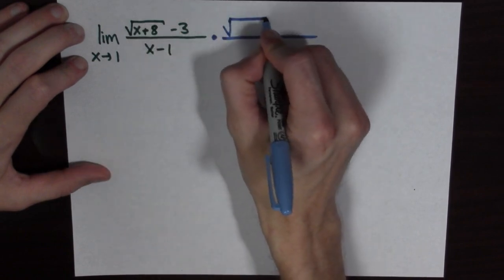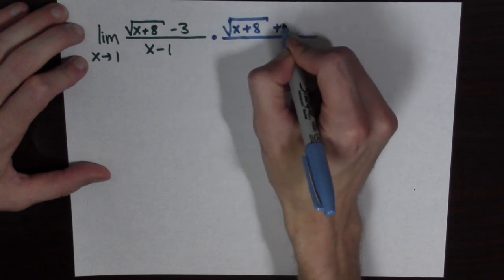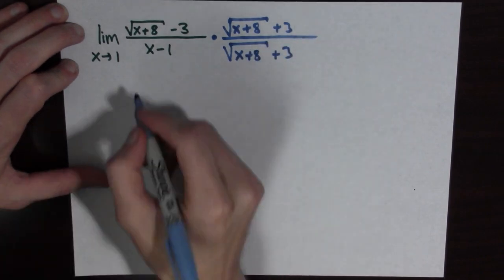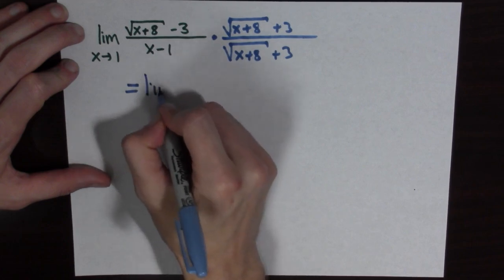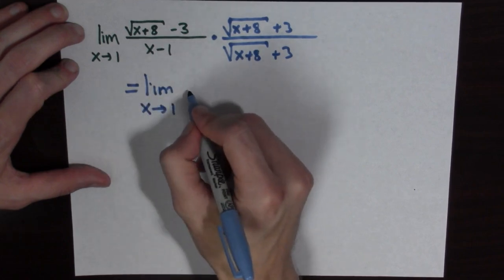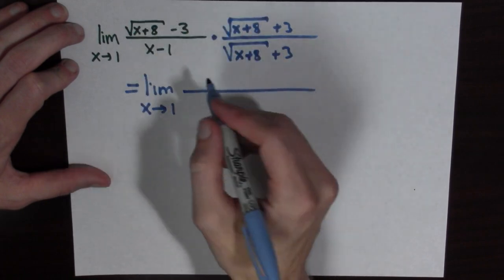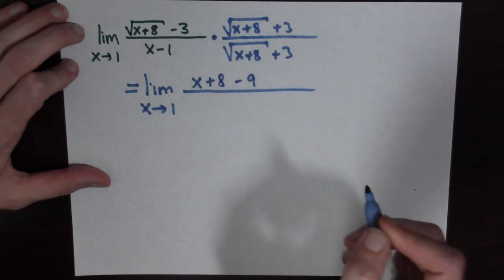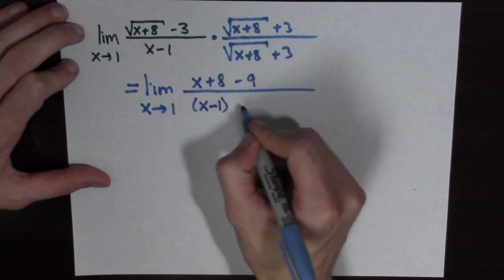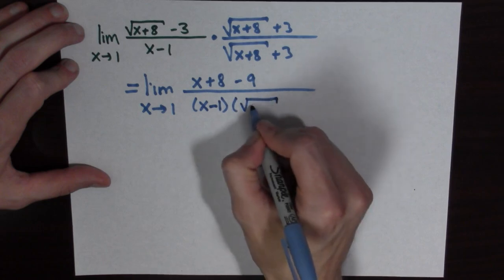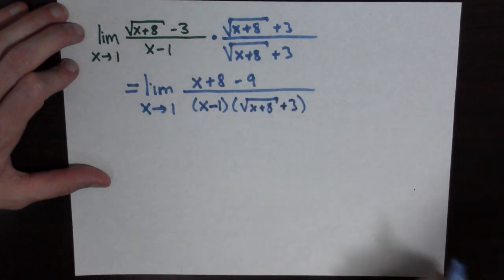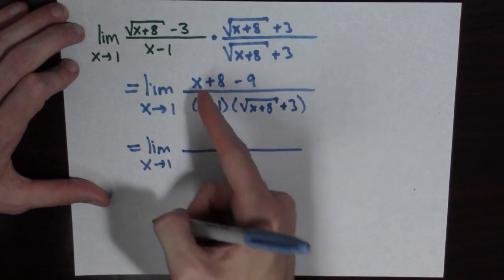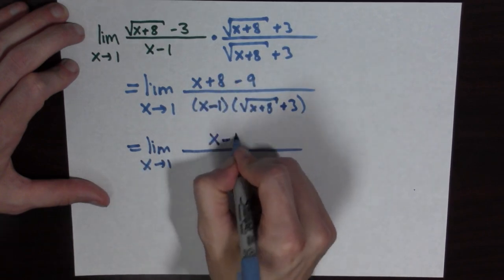So we multiply by the square root of x plus 8 plus 3, all over the square root of x plus 8 plus 3. This equals the limit as x goes to 1, and when we expand we find the numerator equals x plus 8 minus 9. In the denominator we leave it as the square root of x plus 8 plus 3. Simplifying the numerator, x plus 8 minus 9 is just x minus 1.